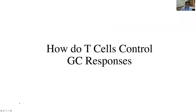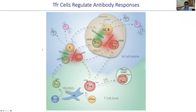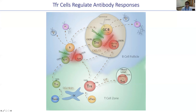How do T cells control germinal center responses? One area our lab is particularly interested in is how the immune system controls antibody responses. Whereas TFH cells stimulate B cells to undergo somatic hypermutation, form germinal centers, and produce memory B cells and plasma cells, there are also T follicular regulatory cells — TFR cells — that can suppress B cell responses. These are FOXP3-positive regulatory populations that ensure B cell responses are appropriate in both specificity and duration.